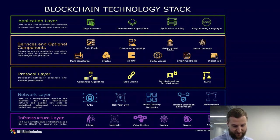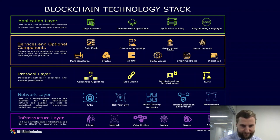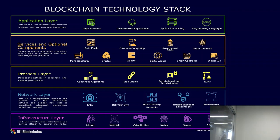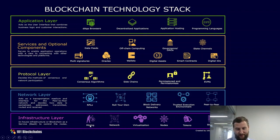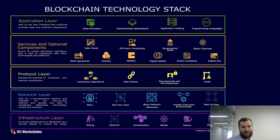Because blockchain hasn't been around since the 1970s and 80s, it's seen as a little less refined, and there are a few different models. But we can borrow from previous models to build the blockchain one. Here's an example with the same layer structure: at the bottom is infrastructure — physical nodes, storage, and in the case of proof of work, some mining that could be separate from nodes and storage.